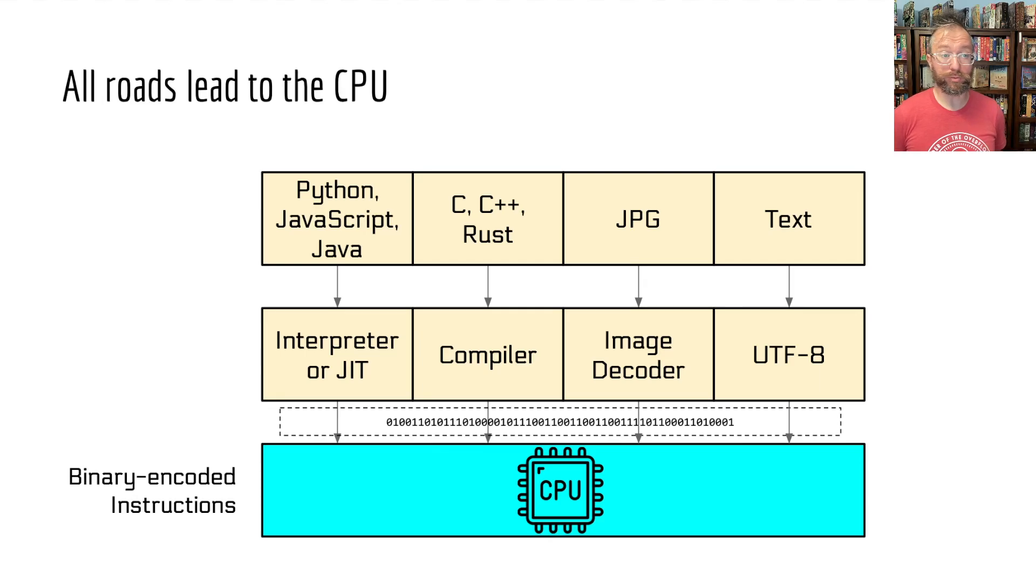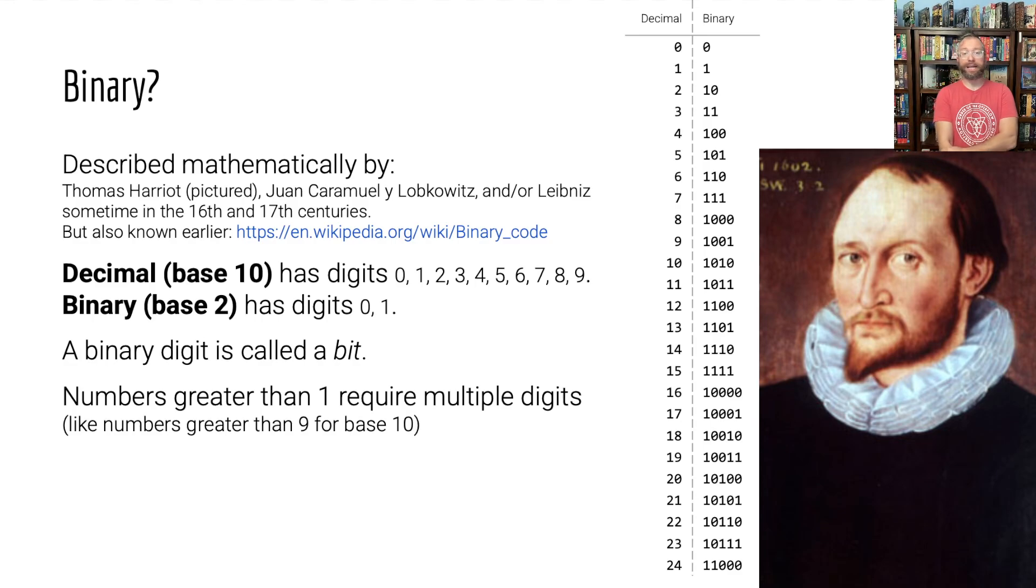It's either ones and zeros because it's compiled to code that's ones and zeros, or it's ones and zeros because it is an image file that internally, in reality, is actually a bunch of ones and zeros. It's text that also is a bunch of ones and zeros in the computer. All right, what are these ones and zeros? These ones and zeros are binary.